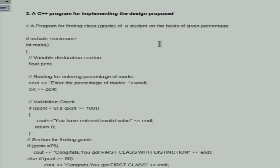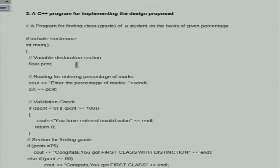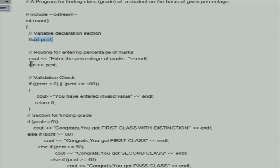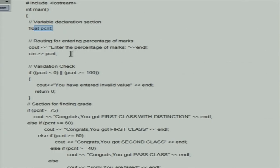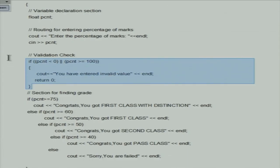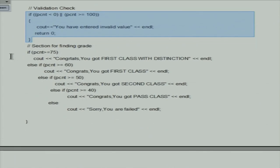Here is our program written in C++. We need one variable to accept the percentage. Since percentage can be in fractions, we emphasize choosing a float type variable. Then we provide a prompt telling the user what to do — we display a message to enter the marks, read the marks, and then validate the percentage entered by the user as per the algorithm.